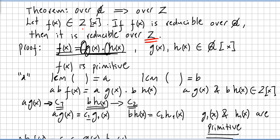This video is still on factorization of polynomials, and we have been seeing a couple of questions around irreducibility of a polynomial. Last video we saw this theorem that over Q implies over Z, so if we have a polynomial over the ring of integers, if the polynomial is reducible over the rationals then it is reducible over the integers.